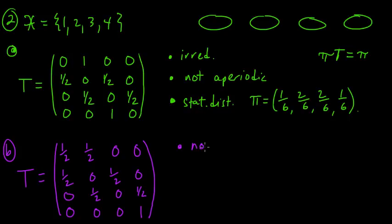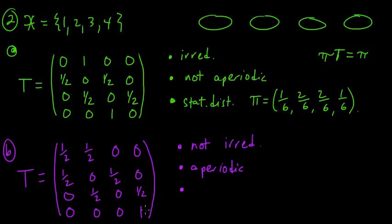This turns out to be not irreducible, because if you're at four you can't get to any of the other states with positive probability. On the other hand, it is aperiodic. You stay at state four — those are two consecutive times. And for the others, if you go to one and then go back, you can take four steps or five steps, and both of those paths have positive probability. Those are two consecutive times, and you can do the similar sort of thing for the others. Therefore, it's aperiodic.